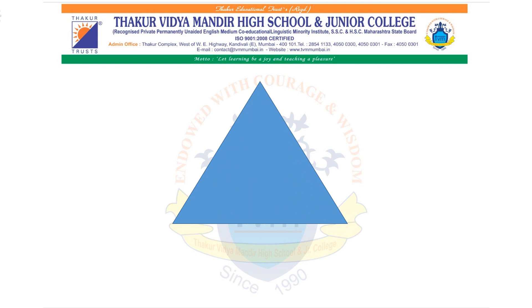Now you can see a triangle on the screen. Let us first name the triangle as ABC — Vertex A, Vertex B, Vertex C. As you know, a triangle has 3 sides. So for triangle ABC, the 3 sides are AB, BC, and AC.